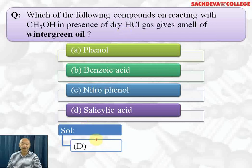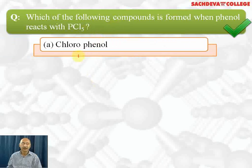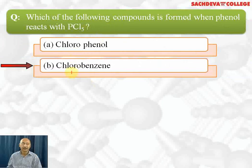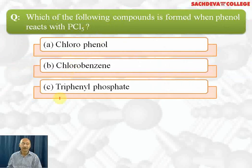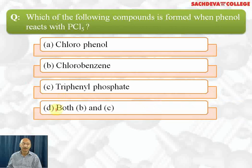Next question: which of the following compounds is formed when phenol reacts with phosphorus pentachloride (PCl5)? Options are: chlorophenol, chlorobenzene, triphenyl phosphate, and B and C together. When phenol reacts with PCl5, chlorobenzene is formed, but it is a minor product.